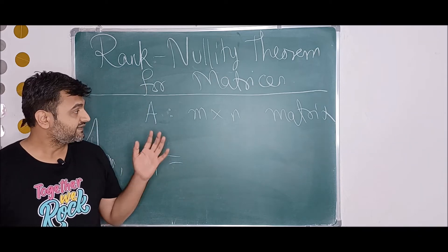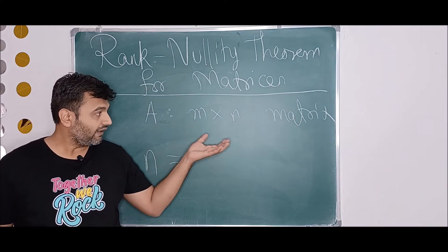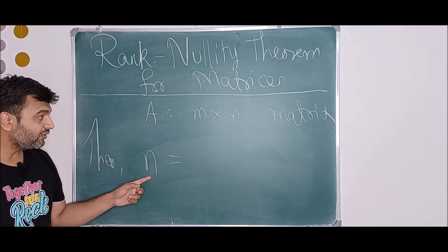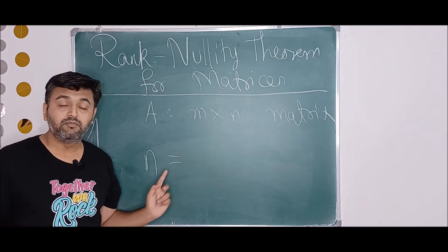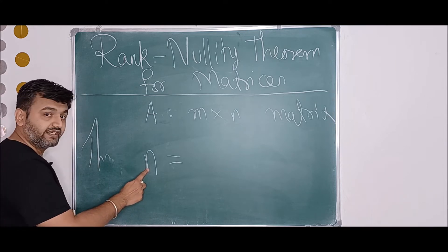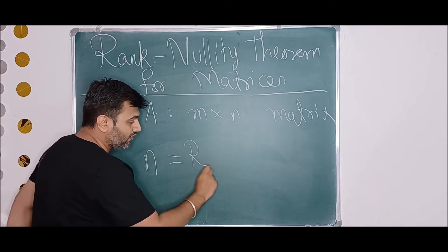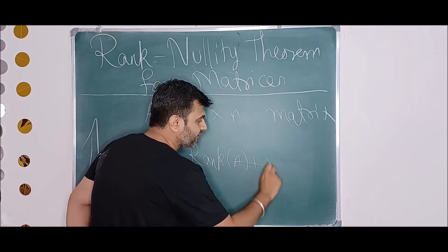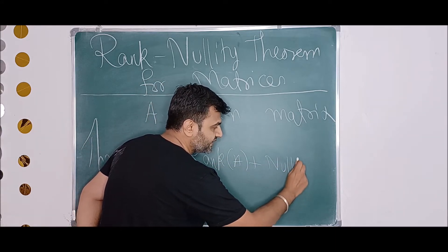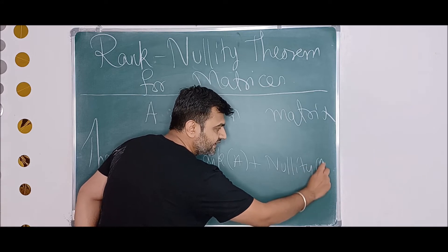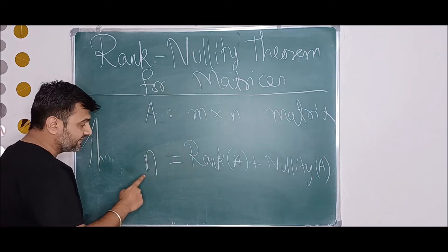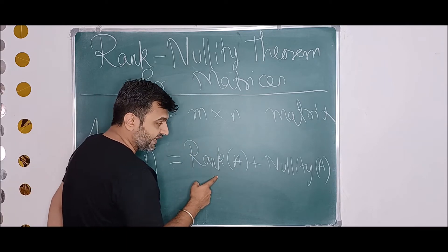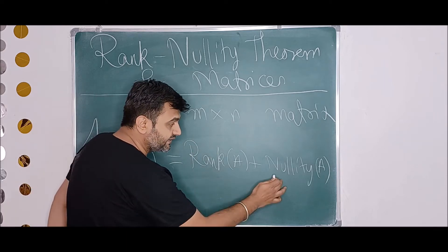So the theorem says that if you have a matrix of order M cross N, then the number of columns N is equal to the rank of the matrix plus the nullity of the matrix. This theorem connects three things: the number of columns equals rank plus nullity.